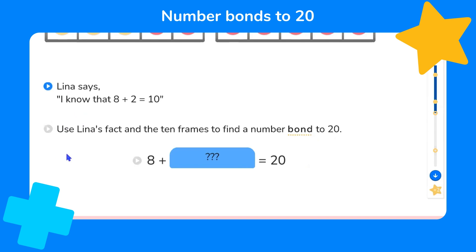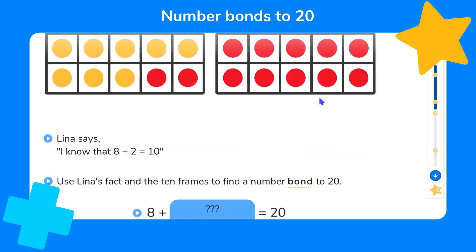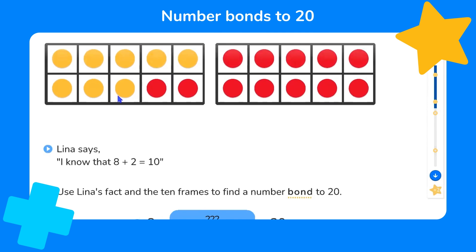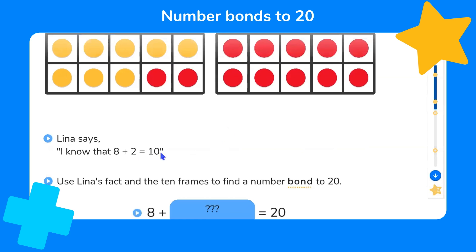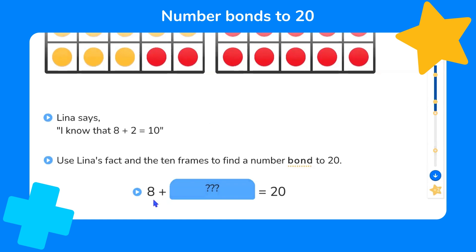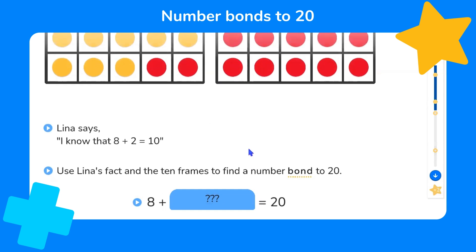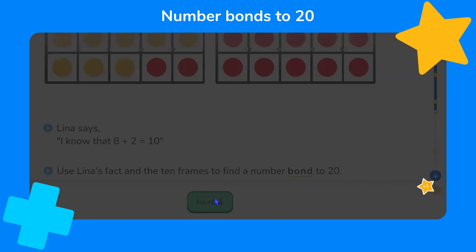Lena then says: I know that eight plus two equals 10. Now we're asked to use Lena's fact and the 10-frames to find a number bond to 20. We've got eight yellow counters, and then two and 10 more. Eight and two make 10, and then 10 more will make 20. So there's an equation with a missing number: eight plus something equals 20. Eight plus 12 equals 20.